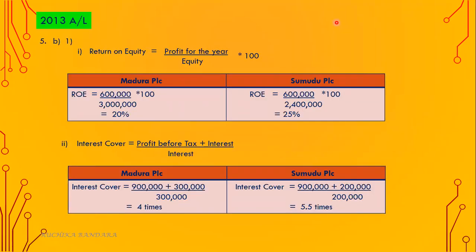2013 A-level, question number 5, B part. There are two requirements; here I've done only the first one. Number one: return on equity equals profit for the year divided by equity, into 100. They have given two companies. For Maduro PLC, profit for the year is 600,000 divided by equity of 3,000,000, into 100 — you get 20%. For Sumudhu PLC, profit is 600,000 over equity of 2,400,000, multiplied by 100 — 25%.